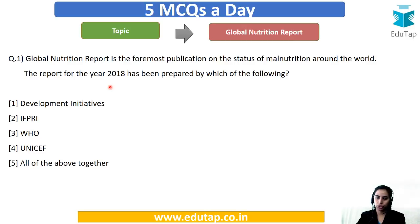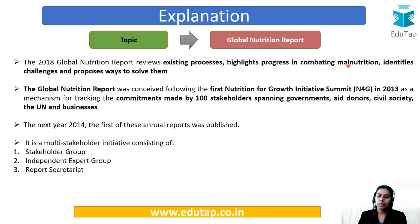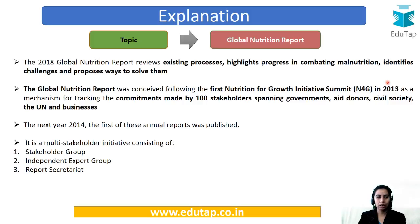The correct answer to this question is Development Initiatives. The 2018 Global Nutrition Report is reviewing existing processes, highlighting progress in combating malnutrition, identifying current challenges, and proposing ways to resolve them. So the 2018 Global Nutrition Report has its focus on malnutrition. This report was conceived at the Nutrition for Growth Initiative Summit held in 2013, where it was decided a Nutrition Report should be launched, and in 2014 the report was launched for the very first time.